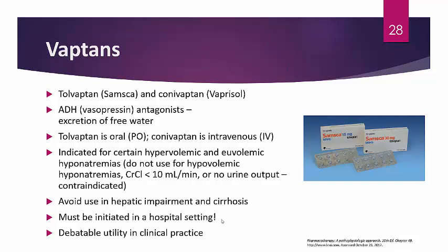Vaptans have debatable utility in clinical practice. They can be used acutely and chronically. However, the literature shows no statistically significant difference in mortality with vaptan use. Hyponatremia itself may not be what kills the patient — it's often the underlying cause. So if you only treat the hyponatremia without treating the underlying cause, you're not meaningfully improving mortality.